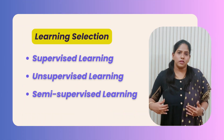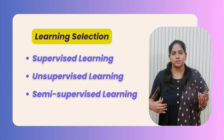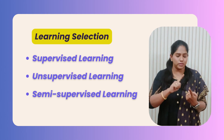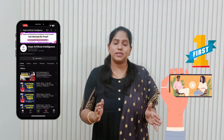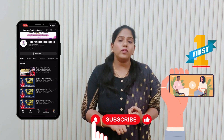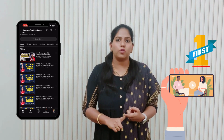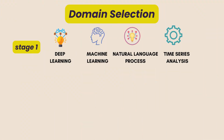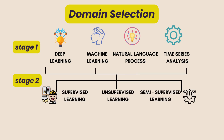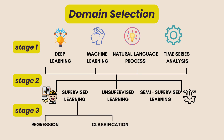Learning selection includes deep learning, NLP, time series analysis, and everything else. For types of learning, we will discuss supervised, unsupervised, and semi-supervised. You can see the series playlist links in the description. In domain selection, the second stage covers supervised, unsupervised, and semi-supervised learning. The third stage — if it is supervised learning — you look at regression or classification.